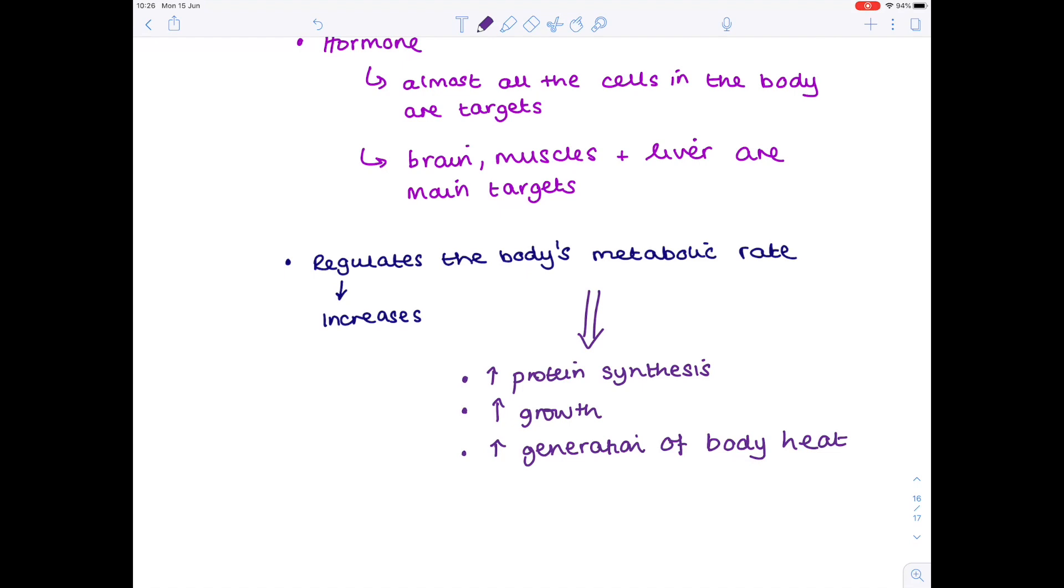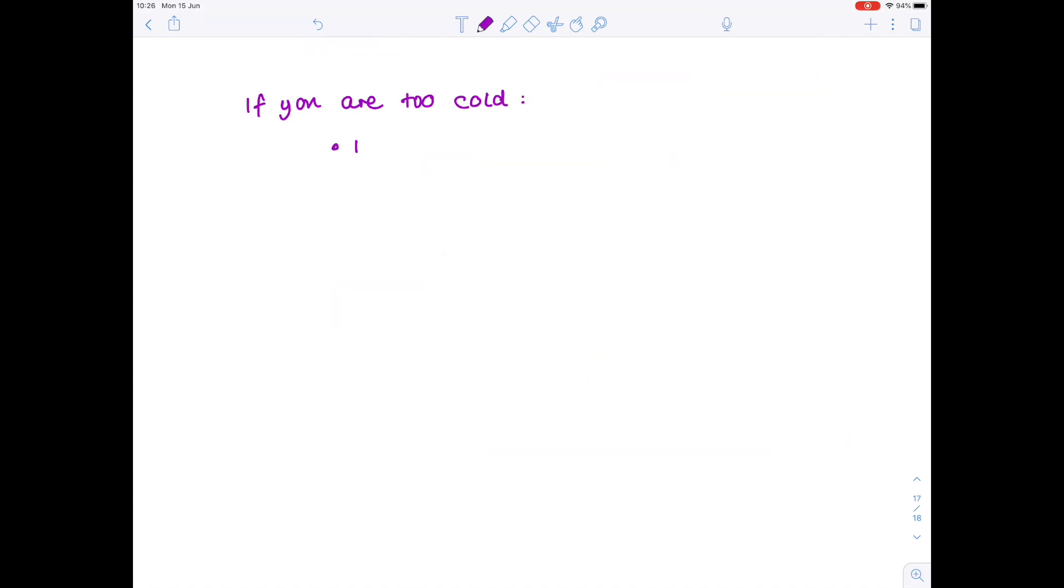That final role, how it increases the generation of body heat, we're going to look at in greater detail now. When our body gets too cold there are various mechanisms that come into play which act to increase our body temperature. Thyroxine is very important in this. If you are too cold, the thyroid gland secretes more thyroxine, leading to increased metabolic rate, shivering and increased respiration by brown adipose tissue.